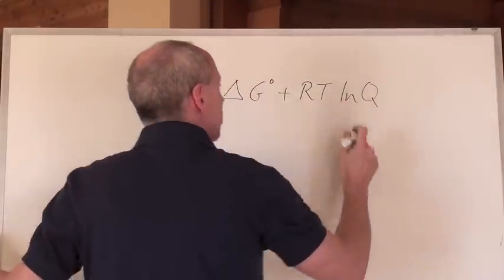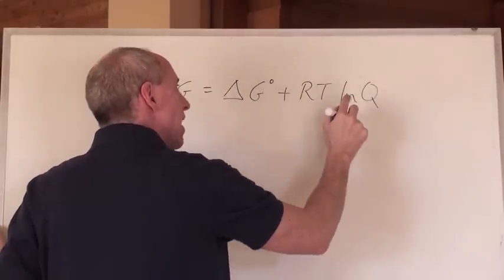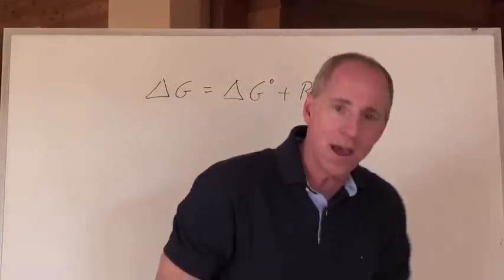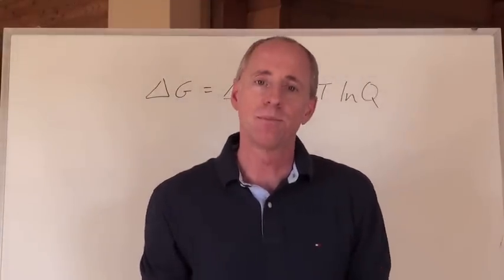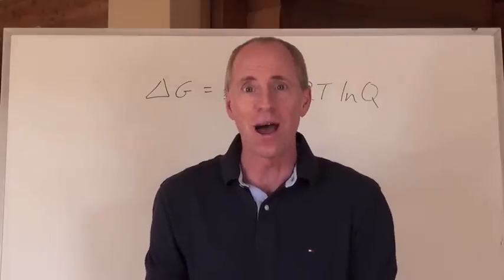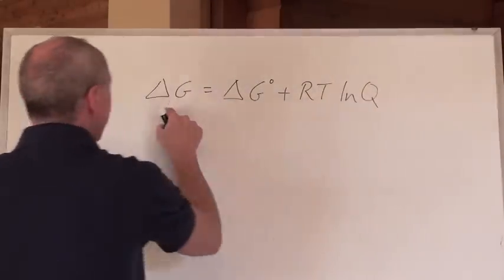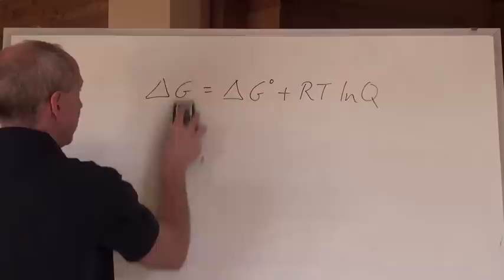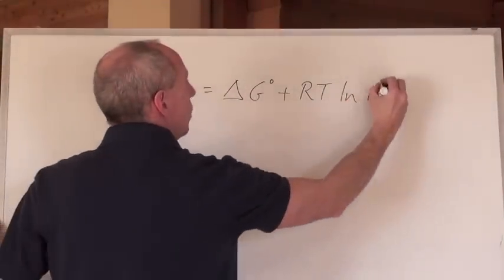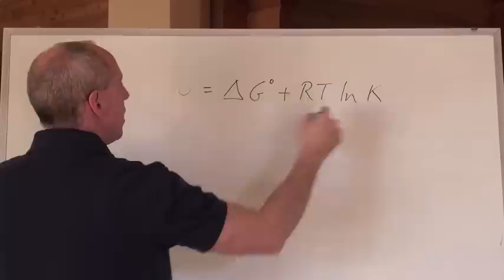You can actually put in a K value here. But if that's the case, what's the ΔG? Remember that the free energy of the system is zero at equilibrium. That means if this is zero, then that is at equilibrium, K. When you rearrange this formula,